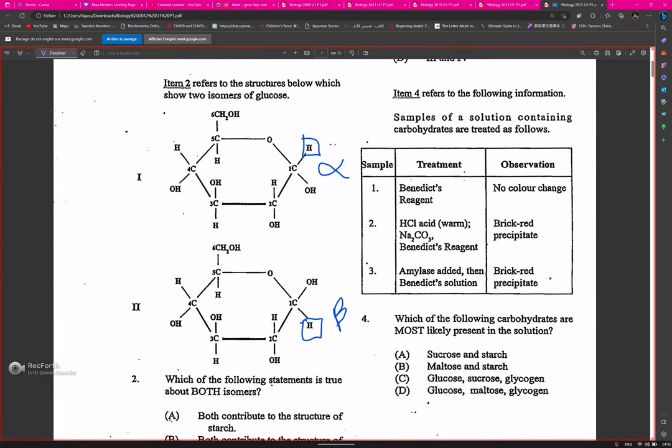Samples of a solution containing carbohydrates are treated with Benedict's reagent with no color change. What does that tell us? No reducing sugar. Then we hydrolyze and neutralize it and get a brick red precipitate. Then we add amylase to the next solution and get brick red precipitate. Which of the following carbohydrates are most likely present in solution based on what they're doing here?